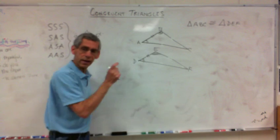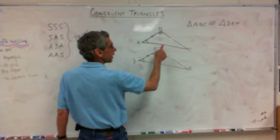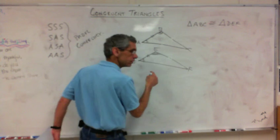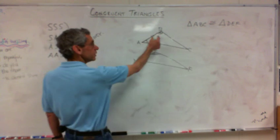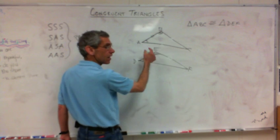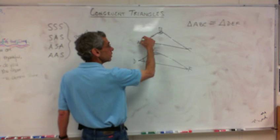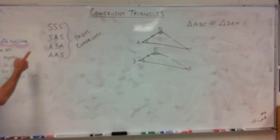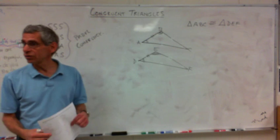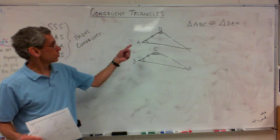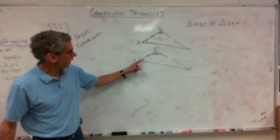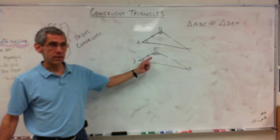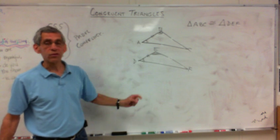Do you see? They've got to be right next to each other. I can't go all over the place — it's got to be in order. It's almost like clockwise. Angle, side, angle. Do I have an angle-side-angle here? Yes. Because of that, those triangles are congruent. Those two triangles, just by knowing there's an angle, side, angle right next to each other — those two triangles are congruent. They're exactly the same.